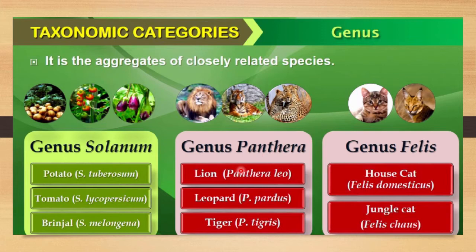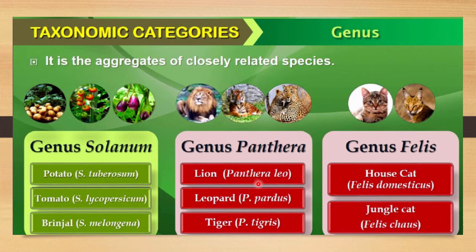For an animal example, the genus is Panthera. Lion has the scientific name Panthera leo — leo is the species name while Panthera is the genus. The genus name may be the same across organisms, but the species name is never the same. Lion is Panthera leo, leopard is Panthera pardus, and tiger is Panthera tigris. If you only say Panthera, it is unclear whether you mean lion, leopard, or tiger, but with the species name it becomes specific.